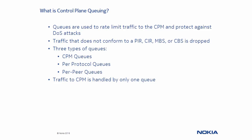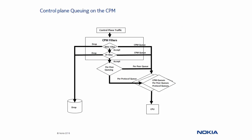The three queues we are going to talk about today are CPM queues, per-protocol queues, and per-peer queues. Traffic will be directed to only one of these three types of queues. A line card receives packets on its physical ports and classifies them as either control or user data. The line card then forwards all control packets towards the CPM card for further processing. Control plane traffic will first be classified by CPM filters, if they are configured.